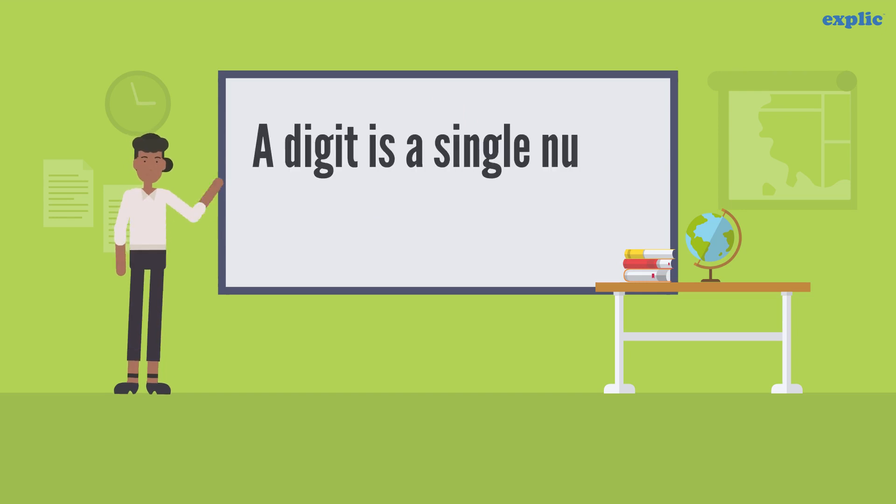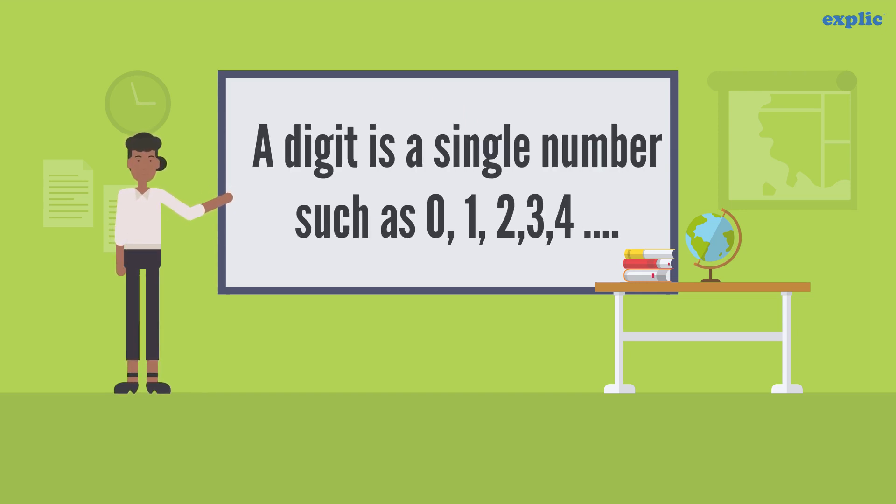Digits. A digit is a single number or symbol, such as 0, 1, 2, 3, and 4.